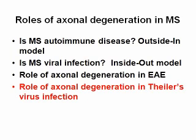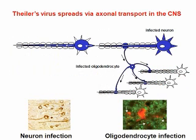Let's move on to the last section: a role of axonal degeneration in a viral model for multiple sclerosis, Theiler's virus infection. As I explained in a previous session, Theiler's virus spreads in the central nervous system, CNS, using axonal transport.